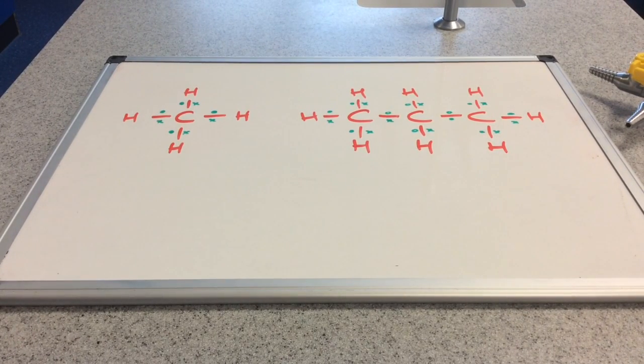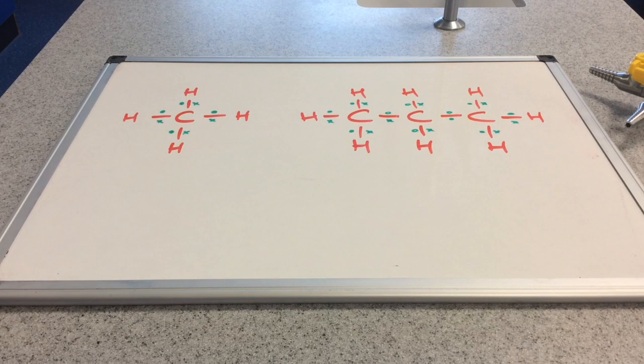So if I was to ask you why does the carbon atom in an alkane form four covalent bonds, I imagine the answer I would get would be because carbon's in group four, it has four outer electrons, and therefore it can form four covalent bonds.